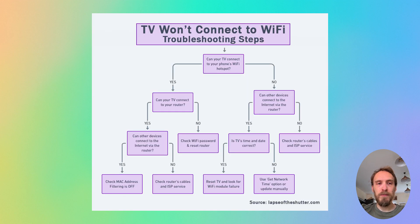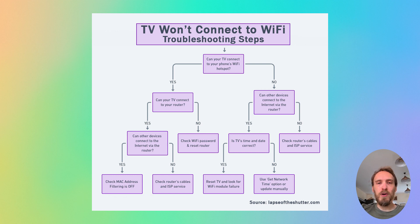The first step is to determine if the problem is with your TV itself or with your Wi-Fi router. To help localise the problem, set up a hotspot on your phone and then connect your TV to your phone's hotspot. You can set up a hotspot on iPhones from the Personal Hotspot option, and on Android from Hotspot and Tethering within Network and Internet.